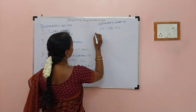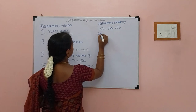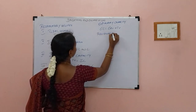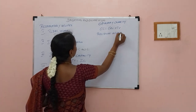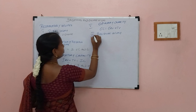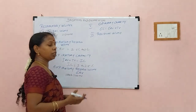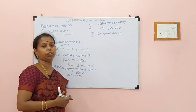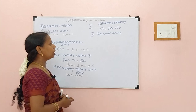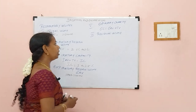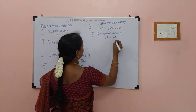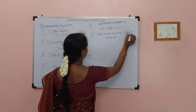The next one is residual volume. Even after forceful exhalation, some amount of air will still remain in the lungs to prevent the collapsing of alveoli. That is called residual volume, which is around 1200 ml. It is abbreviated as RV.